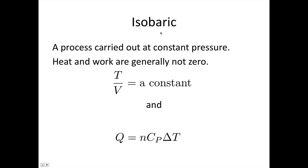An isobaric process is a process carried out at constant pressure. Heat and work are generally not zero. In this case, the ideal gas law tells us that T over V is constant. And we saw in the last lecture that the heat transferred into the system is given by n C_P delta T.